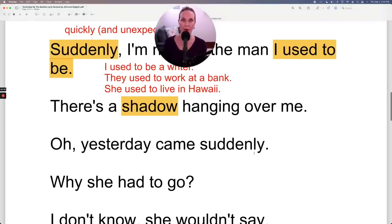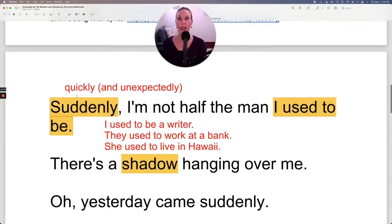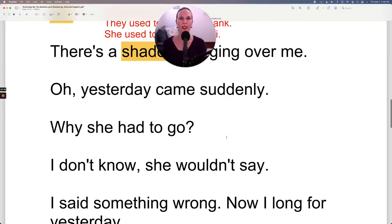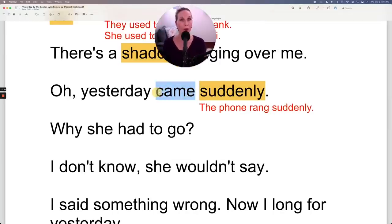Oh, yesterday came suddenly. Notice here, suddenly we have—before we had it at the beginning. Suddenly I'm not half the man I used to be. And here we have it at the end. This adverb is quite flexible. You can put it at different parts. Yesterday came suddenly. I said before suddenly the phone rang. I could also say the phone rang suddenly. So it's a flexible adverb. Of course, our past simple came because it's yesterday. So this is a great beginner song to practice the past simple.